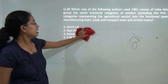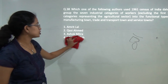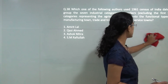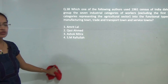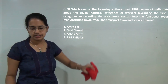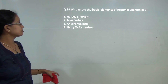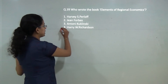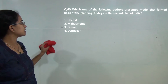Ashok Mitra, in his functional classification of towns, used the 1961 census and demarcated towns into 3 basic categories: manufacturing towns, trade and transport towns, and service towns. So Ashok Mitra is the correct answer. Next, the elements of regional economics were laid forward by Harry Richardson, so Harry Richardson is the correct answer.